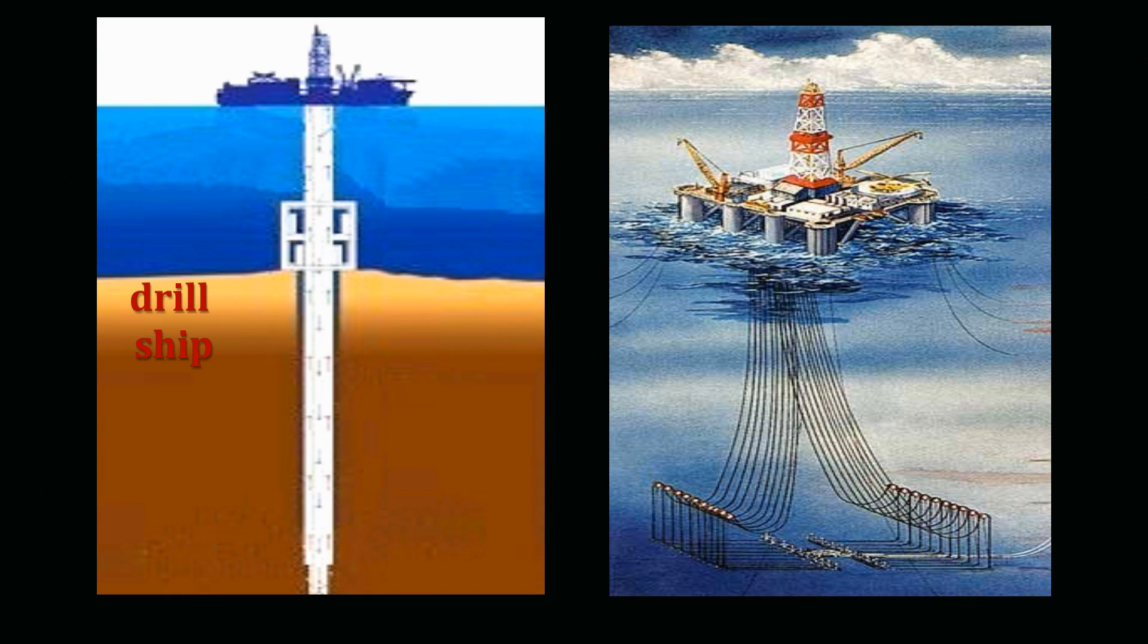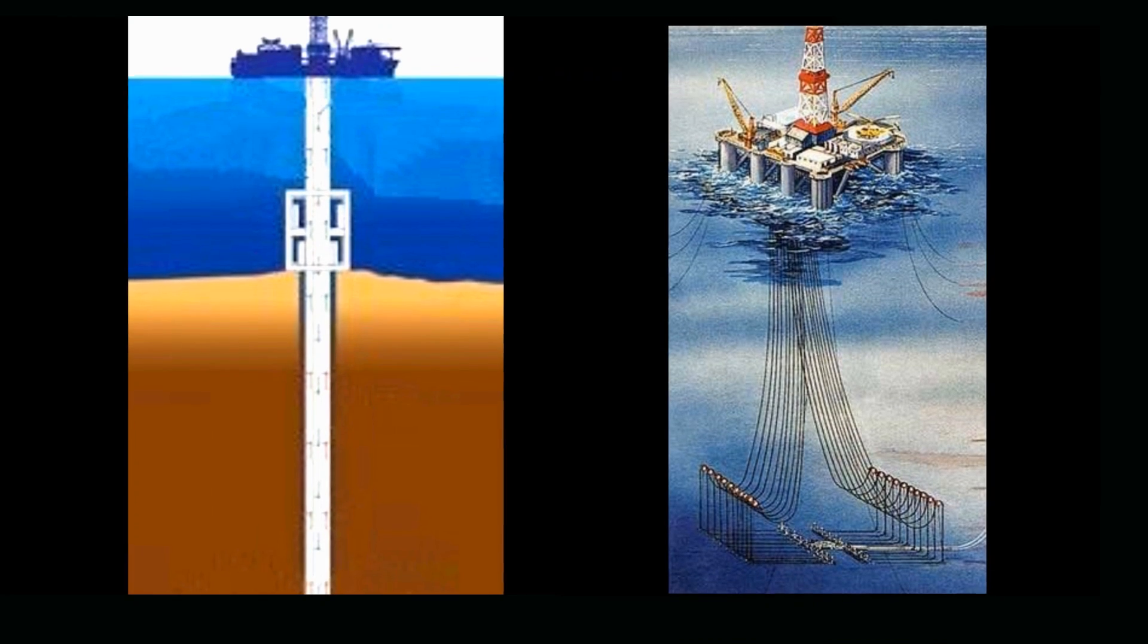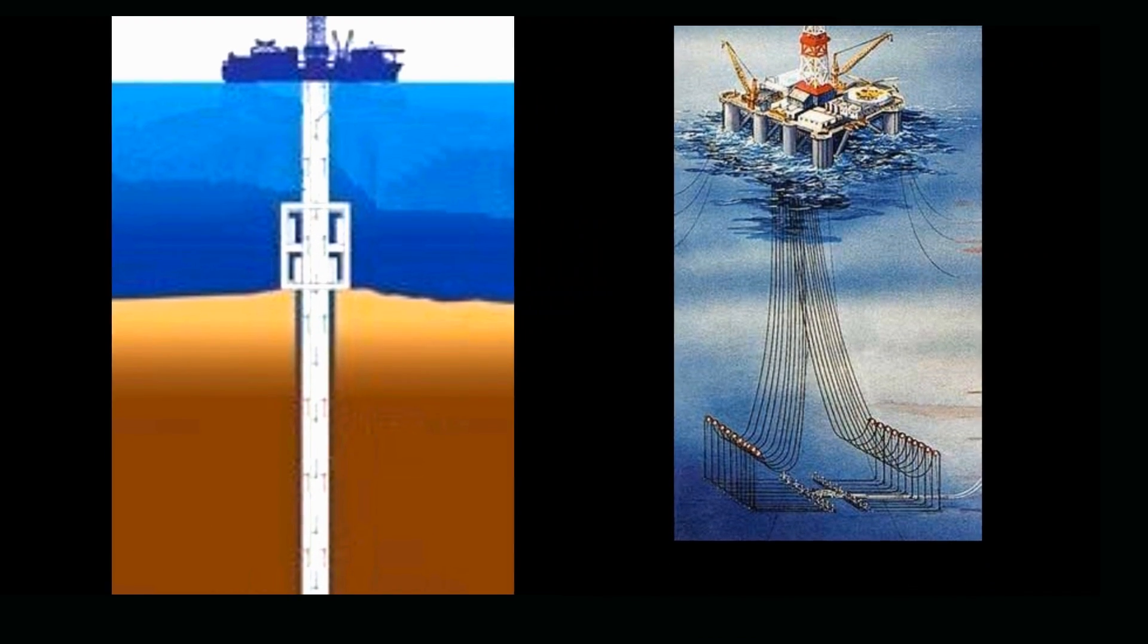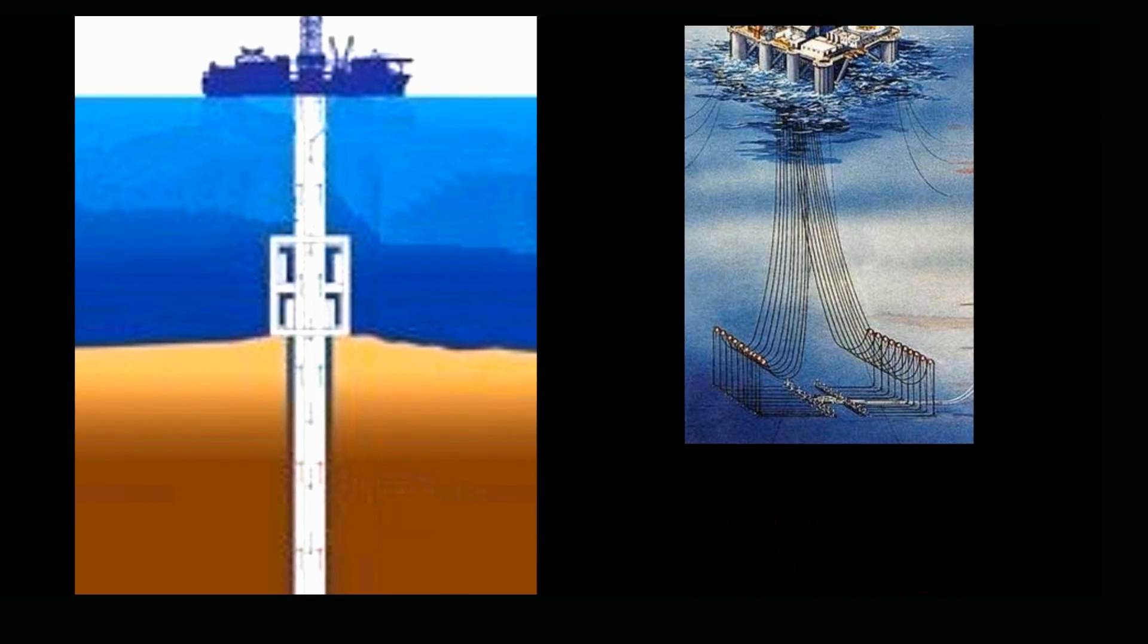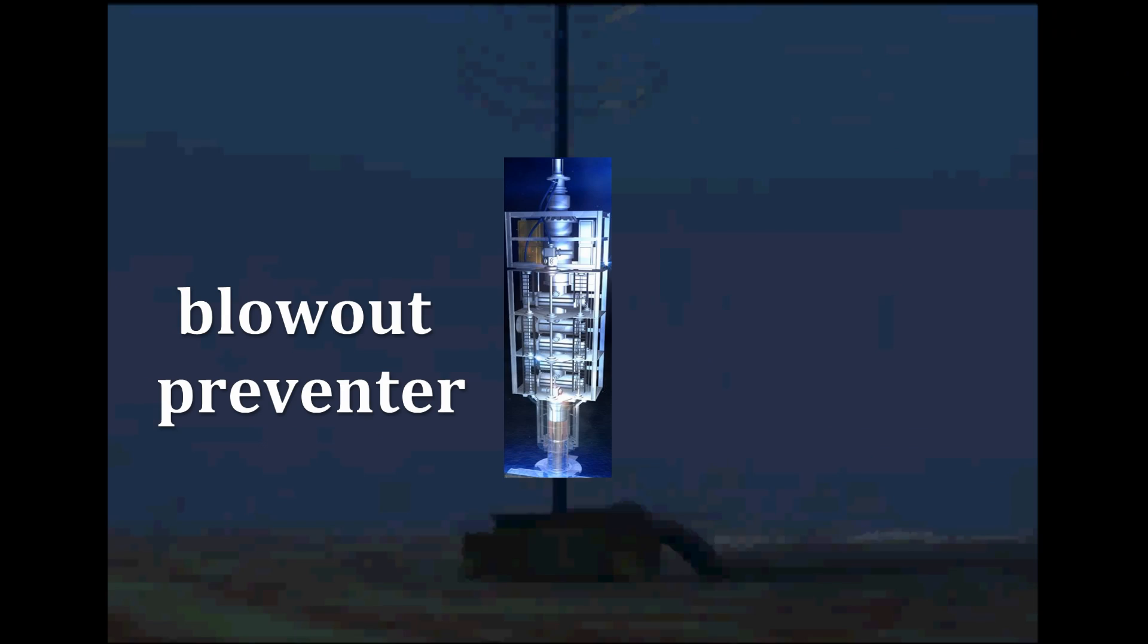With floating units like drill ships or semi-submersibles, a guide structure is fastened to the bottom of the body of water and secured to the ocean floor with piles. The blowout preventers are then latched into the guide structure on the sea floor and then connected to the surface via a marine riser. These risers function as conductor strings.